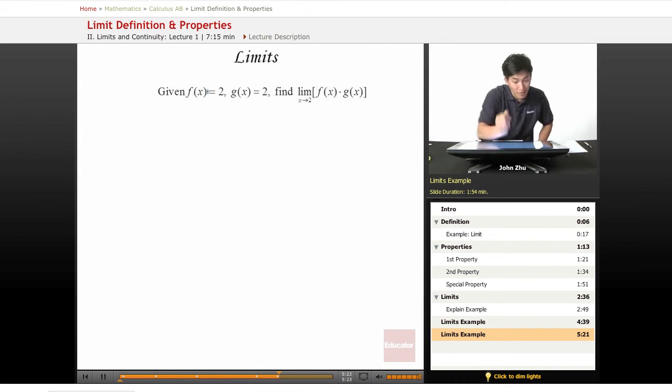For the next example, given f(x) equals 2, g(x) equals 2, find the limit as x approaches 2 of the two functions multiplied together. So we know by a property, limit of x to 2, f(x) times g(x)...